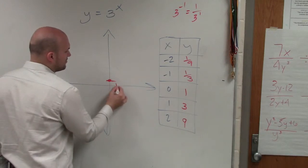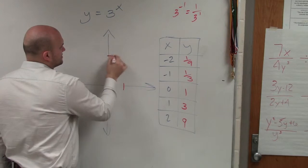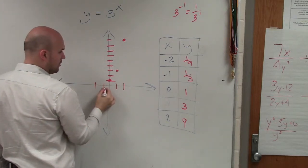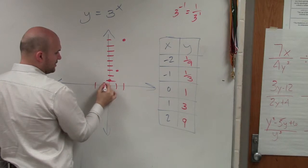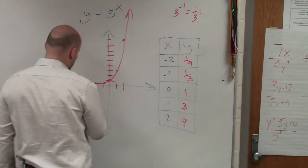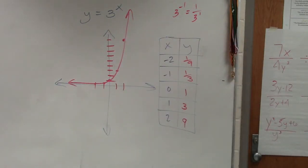So then, we start plotting them. 1, 2, 3, 4, 5, 6, 7, 8, 9. At negative 1 is 1 third. At negative 2 is 1 ninth. So now that we have graphed these, there's a couple of things.